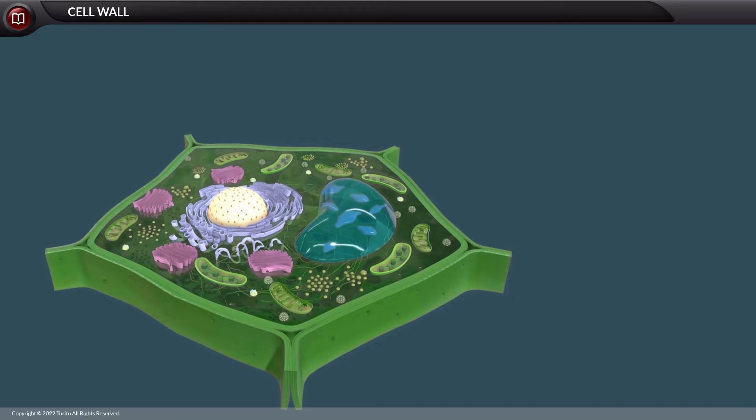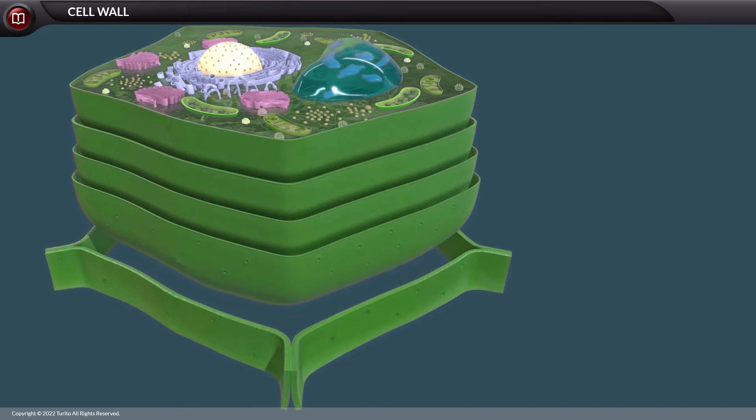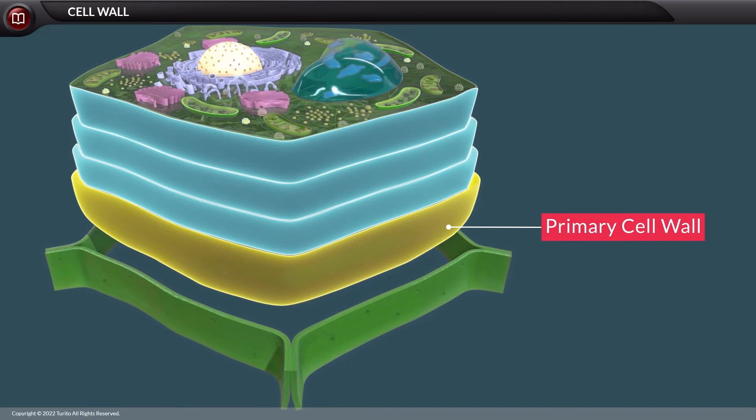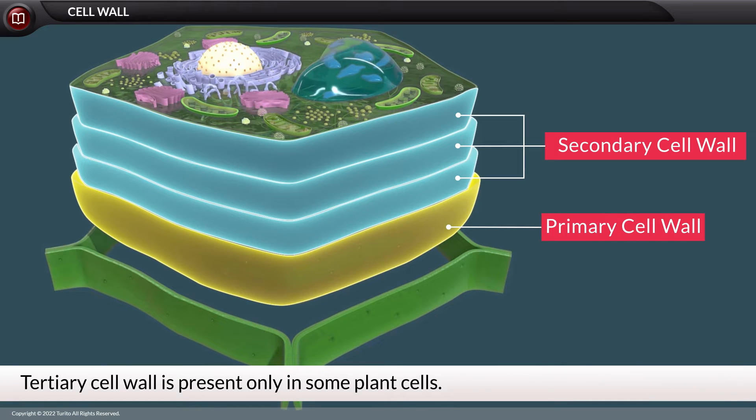Structurally, the plant cell wall may have three layers, namely, the primary cell wall, the secondary cell wall, and the tertiary cell wall, that is present only in some plant cells.